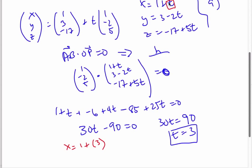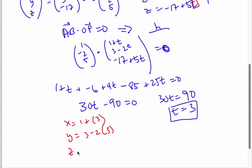because here's my, plug it in for here. Y is equal to 3 minus 2 times 3, and Z equals negative 17 plus 5 times 3,